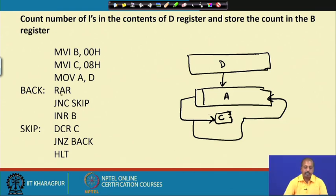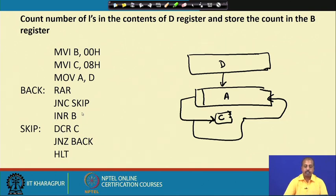This is done in the program: rotate accumulator right, then jump on no carry to skip incrementing. If the carry is not set we do not count it as a 1 bit, so the B register is not incremented. Then we decrement C because one rotation has been done, and jump on not zero to go back. After this loop completes, the B register will have the number of 1s that were originally in the D register.